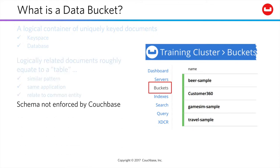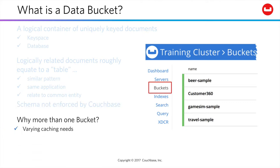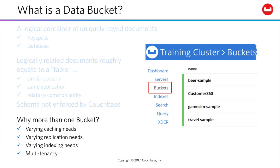But there is no schema being enforced by Couchbase. Couchbase quite intentionally offers the flexibility to continually evolve the shape of your documents, while providing language elements that allow you to respond to varying document shapes. Which, of course, leads to a question: why would you ever have more than one bucket?